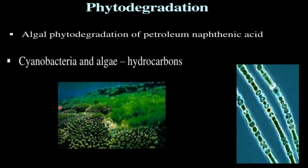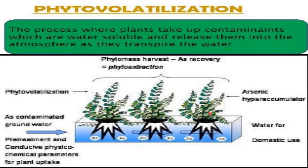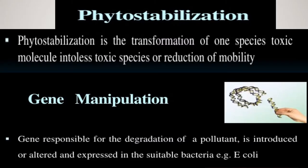Phytodegradation: algae can phytodegrade petroleum, naphthalic acid, and hydrocarbons. Mainly cyanobacteria and other algae are able to degrade these compounds. Phytovolatilization is the process where plants take up water-soluble contaminants and release them into the atmosphere as they transpire water. Phytostabilization is the transformation of one toxic species of a molecule into a less toxic species, or reduction of mobility.